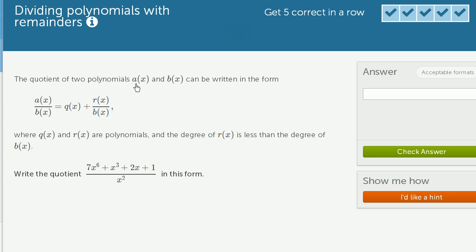The quotient of two polynomials, a of x and b of x, can be written in the form a of x over b of x is equal to q of x plus r of x over b of x,